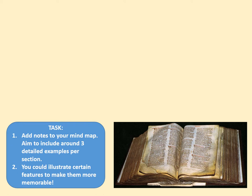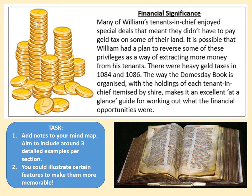The financial significance: many of William's tenants-in-chief enjoyed special deals meaning they didn't have to pay geld tax on some of their land. William may have planned to reverse some of these privileges to extract more money from his tenants — including tenants-in-chief and knights. There were heavy geld taxes in 1084 and 1086. The way the Domesday Book is organised, with holdings of each tenant-in-chief itemised by shire, makes it an excellent at-a-glance guide for identifying financial opportunities, and this is exactly how it was used.